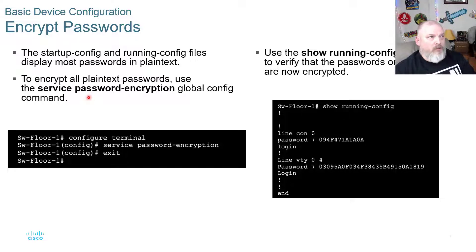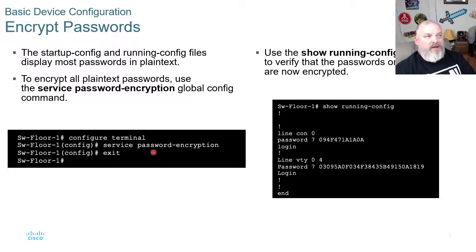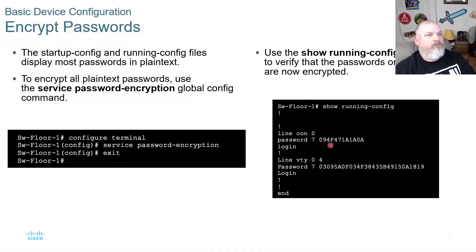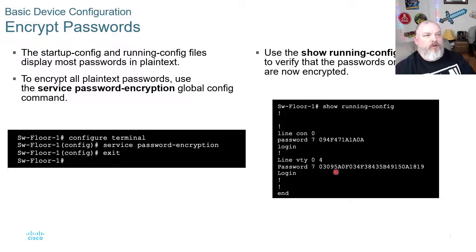To secure or encrypt plain text passwords, use the 'service password-encryption' command in global configuration mode. Go into configure terminal, type 'service password-encryption' — you can use the tab key to autocomplete: type 'serv', tab, space, 'pass', tab. Then type 'exit', and use 'show running-config' to verify that the passwords on the device are now encrypted. You can compare before and after: before the command your passwords show in plain text; after running 'service password-encryption', the show run output will display the encrypted values.